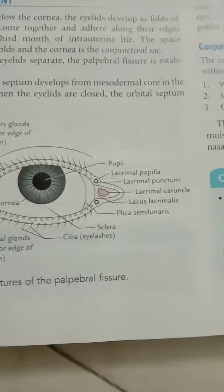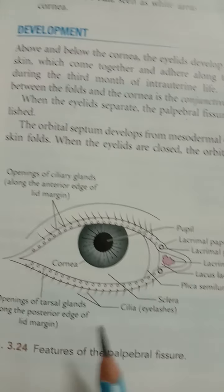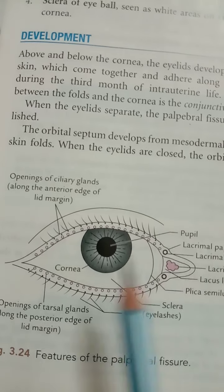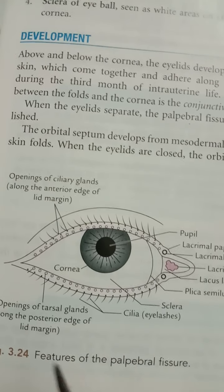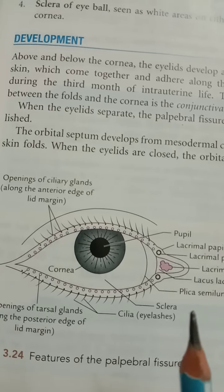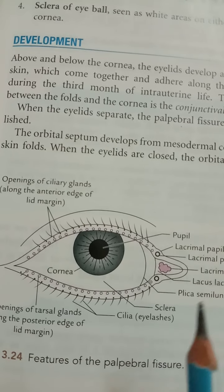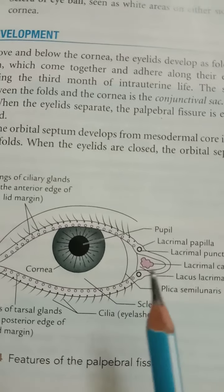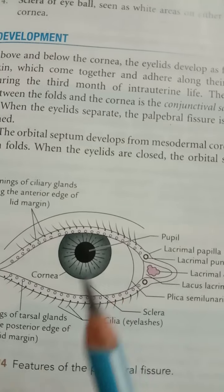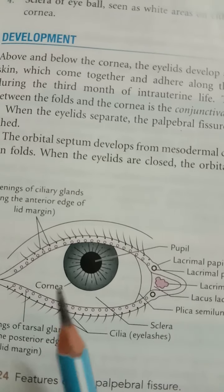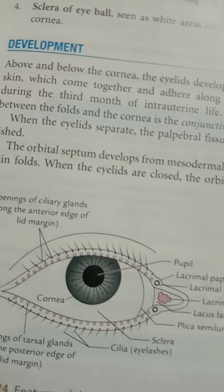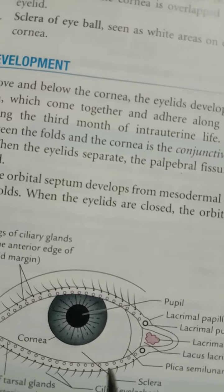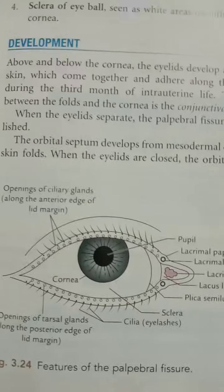The structure of the eyelid is made up of skin which is very thin, loose, and easily distensible, and can be inflamed by edema from fluid or blood. The superficial fascia is without fat. The palpebral fascia of the two lids forms the orbital septum, and its thickening forms the tarsus plate.